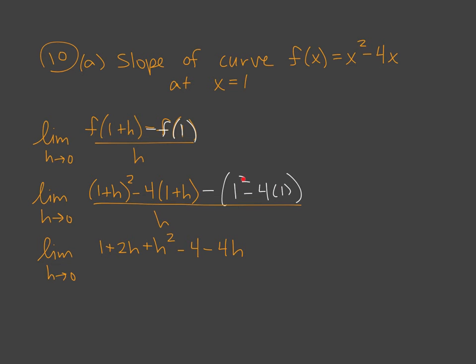Then we have to find what this value is. So it's 1 squared, so 1 minus 4 times 1. So 1 minus 4. This is a negative 3 in here. So we're doing minus negative 3. So that's a plus 3 at the end, all over h.